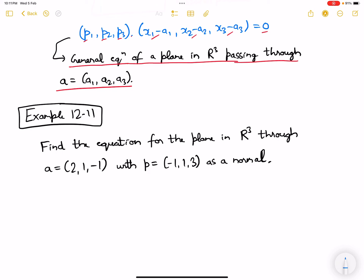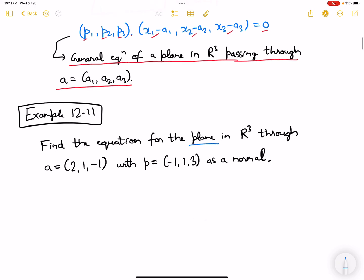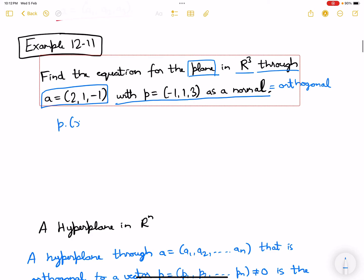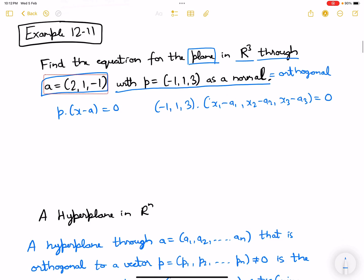Now moving forward, let's do an example from the book. Find the equation for the plane in R³ through a equals (2, 1, -1) with p equals (-1, 1, 3) as a normal. Normal is equivalent to being orthogonal to the plane. We know this formula: p dot (x minus a) equals zero. So we have (-1, 1, 3) dot (x1 minus 2, x2 minus 1, x3 minus (-1)) equals zero.